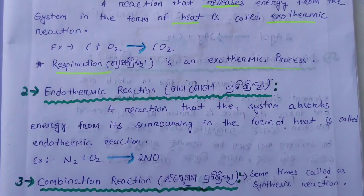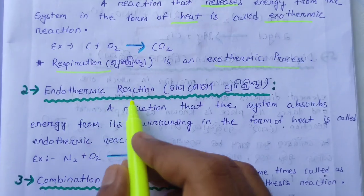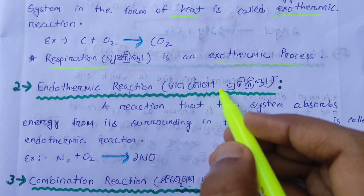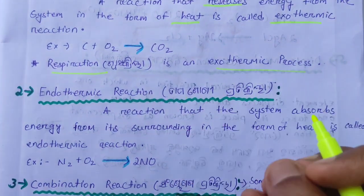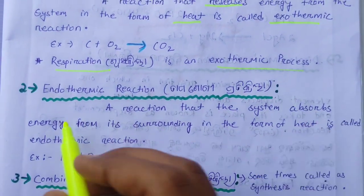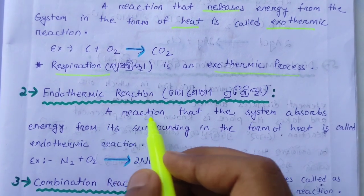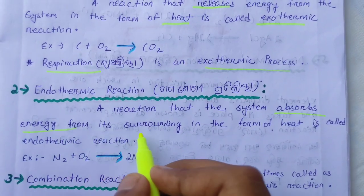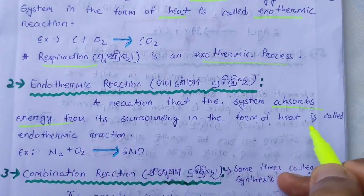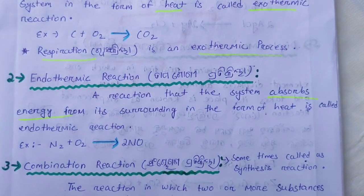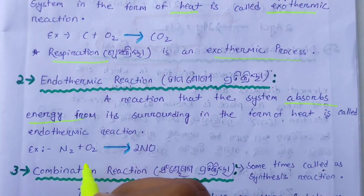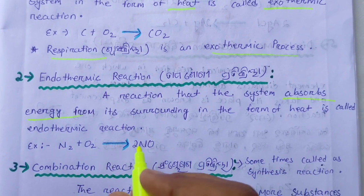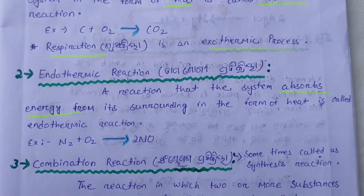An endothermic reaction is a reaction in which the system absorbs energy from its surroundings in the form of heat. It is called an endothermic reaction. For example: N₂ + O₂ → 2NO. Nitrogen plus oxygen gives nitrogen oxide.